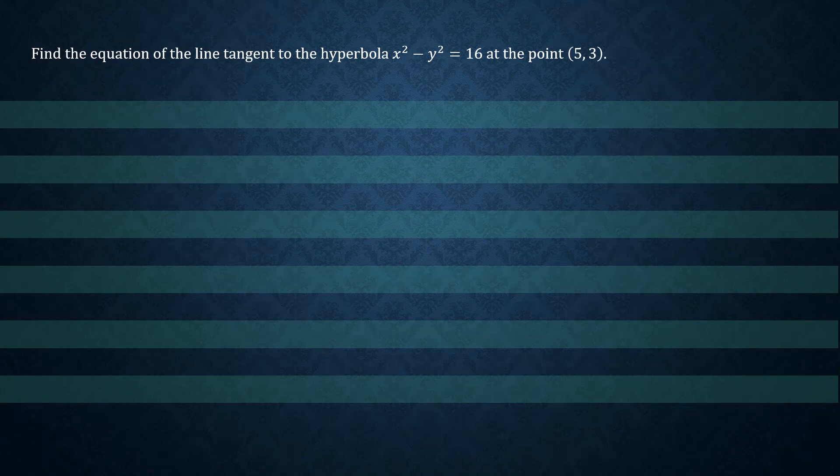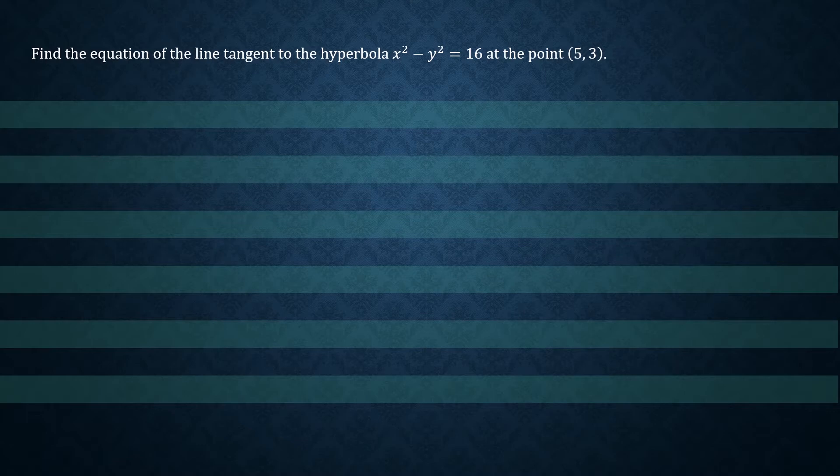Hi everyone, welcome to a new question. Here we want to find the equation of the line tangent to the hyperbola x squared minus y squared equals 16 at the point (5, 3).